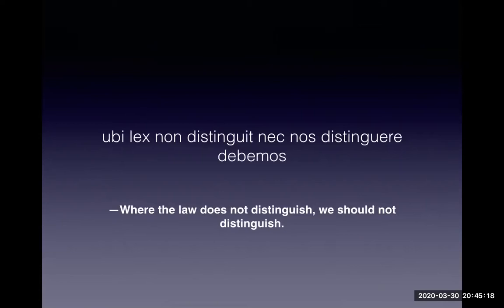Next, ubi lex non distinguit nec nos distinguere debemus, which translates to 'where the law does not distinguish, we should not distinguish.' A very good application of this is Article 3, Section 1 of the Constitution, which states that no person shall be deprived of life, liberty, or property without due process of law, nor shall any person be denied the equal protection of the laws — such that the constitutional guarantee of due process is granted to every Filipino regardless of status, province, whether rich or poor, educated or non-educated, regardless of political beliefs and religious beliefs.